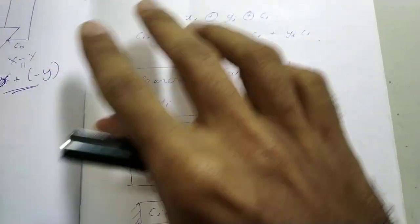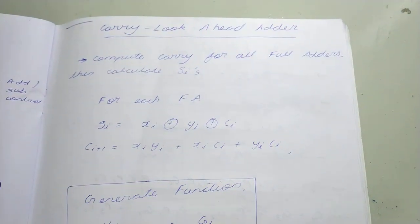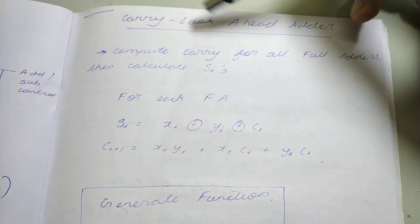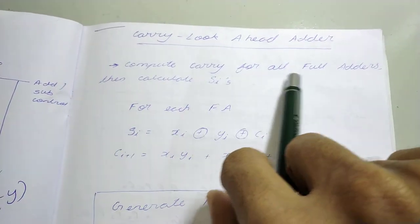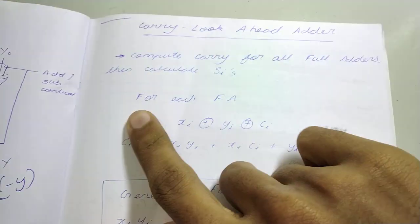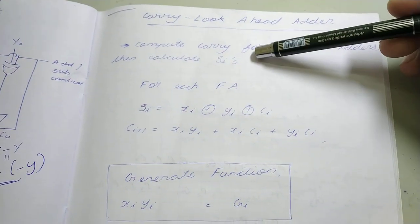To reduce the number of gate delays to do the addition, we have the carry look-ahead adder. In the carry look-ahead adder, we don't have to wait for the carry for a long time. Here we compute carries for all the full adders in one go and then we calculate the sums, the si's.